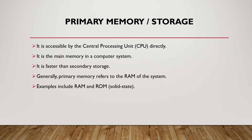We have three different categories of storage. The first one is known as primary memory or storage. It is accessible by the CPU directly. It is the main memory in a computer system and is faster than secondary storage. A general primary memory refers to the RAM of the system. Examples include RAM and ROM.